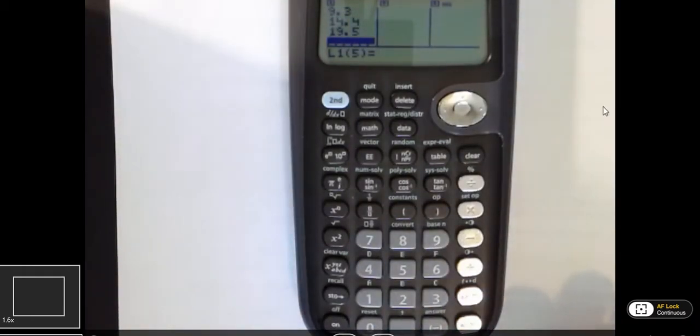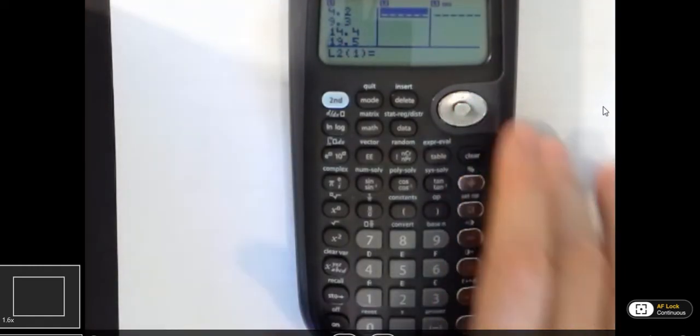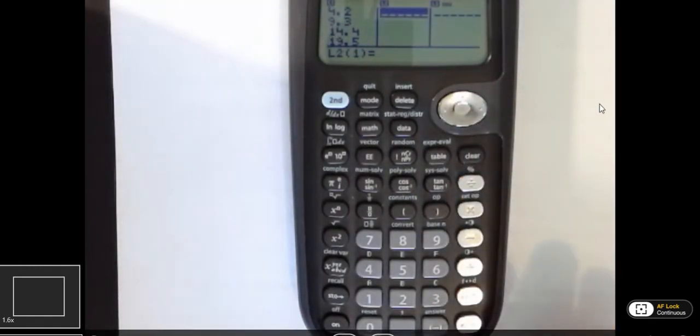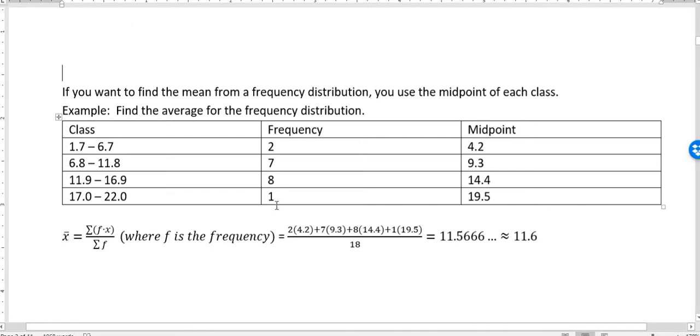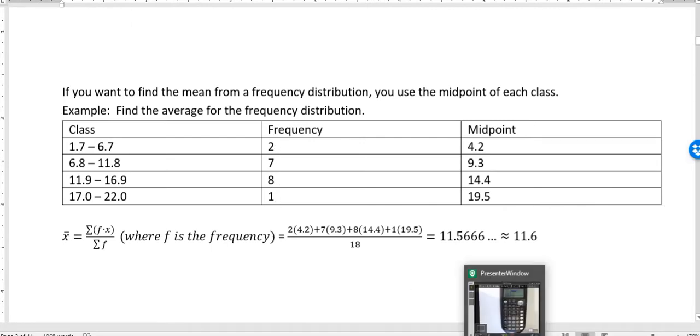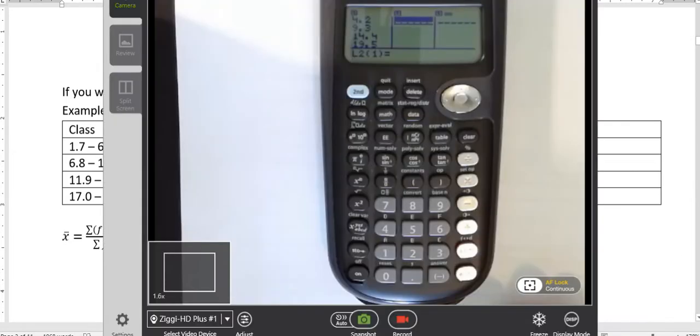And now I want to enter the frequencies for each of those. And I can't remember what those were. Let's go back and see. The frequencies given were 2, 7, 8, and 1. And I want to make sure and put those in in the right order because they match up to the particular classes they're associated with. So 2, 7, 8, and 1.